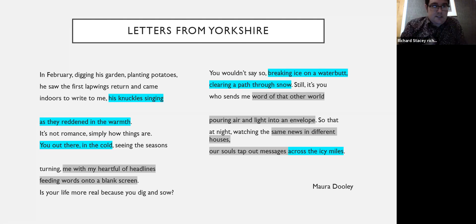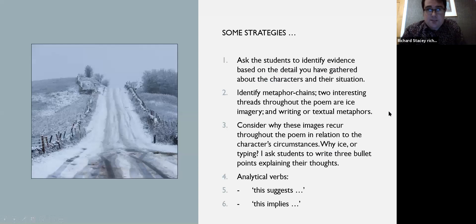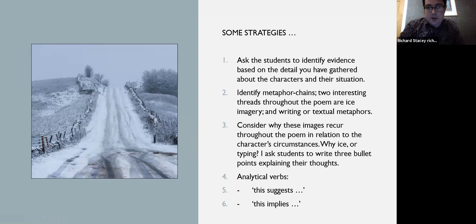Once students have cultivated a degree of evidence and that evidence is helping them understand the poem and embark upon analysis, I start to ask them to think about why that evidence is significant. There are several phrases I tend to use — analytical verbs. If a student has identified that ice imagery is recurrent throughout the poem, the next question is: why? What are the effects generated by ice imagery? One way I tell students to shape their responses is through analytical verbs: 'this suggests' or 'this implies' — a way in which understanding can be harnessed and moved towards a form of analysis.